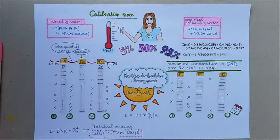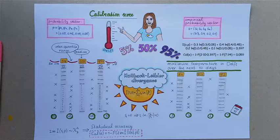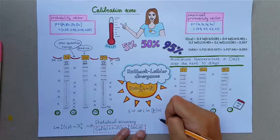For our example, we get that the calibration score is actually equal to 0.059, so the statistical accuracy of the expert is 0.059.